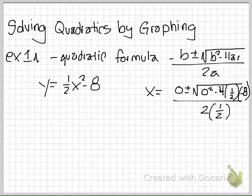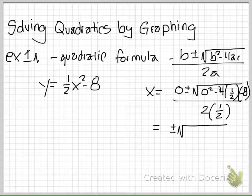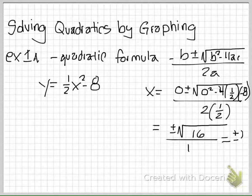I'm going to simplify that a bit further. We get plus or minus the square root of — negative 4 divided by 2 is negative 2, negative 2 times negative 8 is 16 — over 1. So plus or minus the square root of 16.